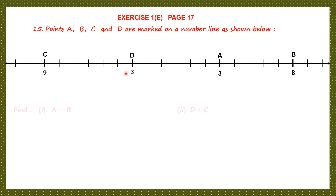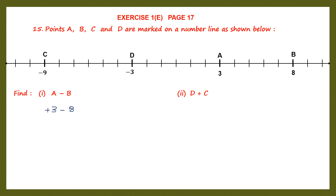Now we have to answer a few questions. The first one is find A minus B. We substitute A and B with the values given. A is 3, so 3 minus B, and B is 8, giving us 3 minus 8. When signs are different, we put the sign of the bigger number and subtract. 8 minus 3 is 5, so the answer is minus 5.